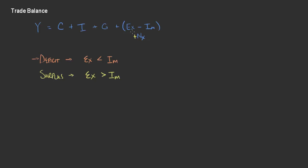A trade surplus is a scenario where you can really have growth in your economy — excess growth. What do we mean by that? We have extra surplus here that would be going to producers in the economy. The producers would be making more goods and services, partly because the price of that good would be higher than the equilibrium price in the economy.